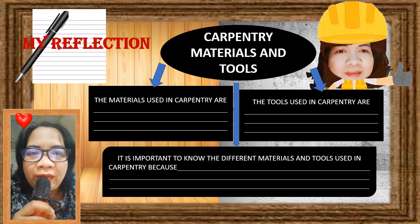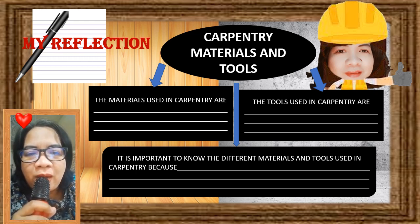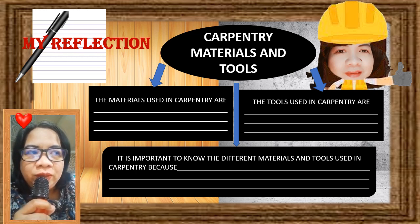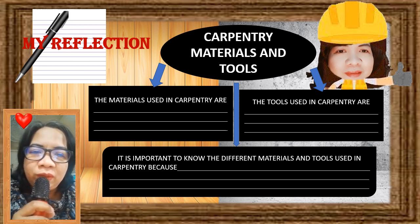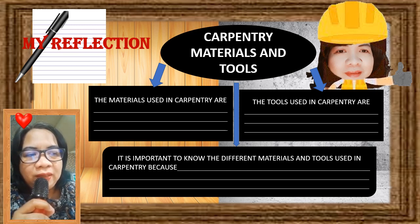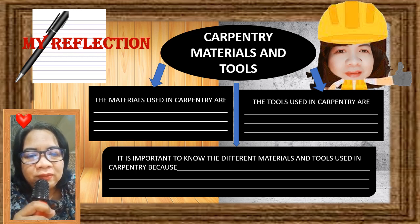On top, you are going to write our topic, which is carpentry materials and tools. In the first box on the left side, write something about the carpentry materials. On the right side, write something you have learned about the carpentry tools. And below, write the importance of why you need to know the different carpentry materials and tools.